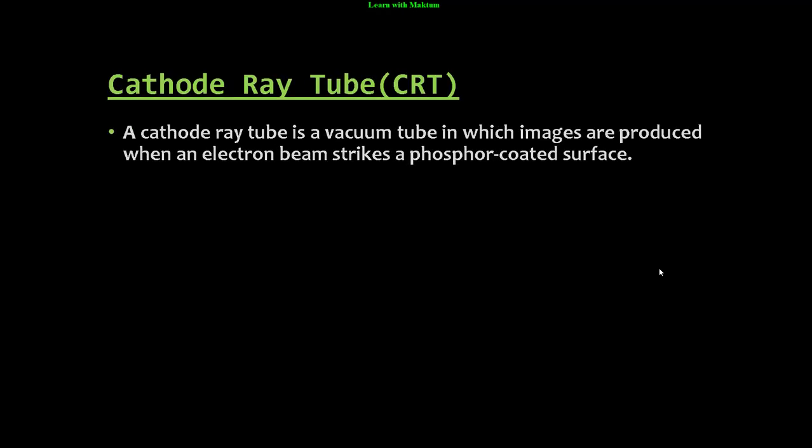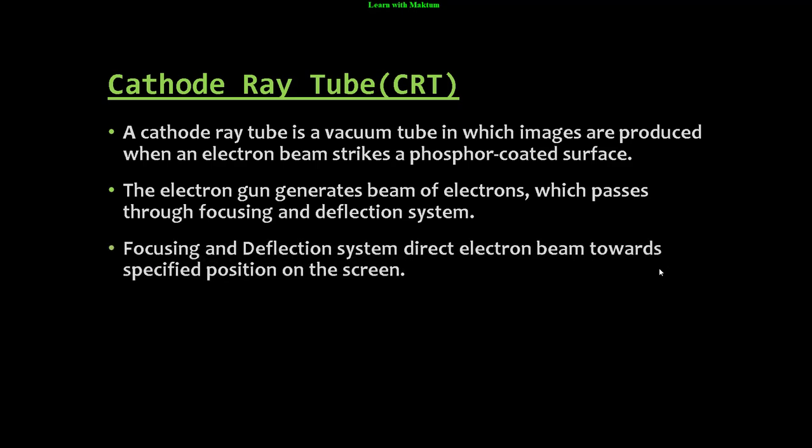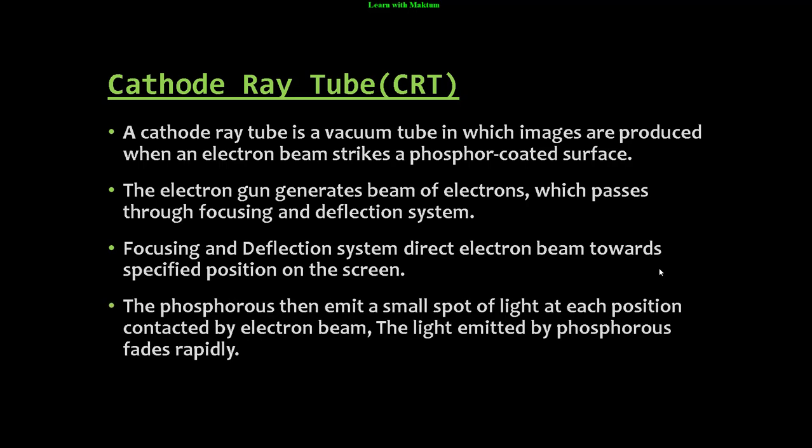A cathode ray tube is a vacuum tube in which images are produced when an electron beam strikes a phosphor coated surface. An electron gun generates a beam of electrons which passes through focusing and deflection systems. The focusing and deflection systems direct the electron beam towards specified positions on the screen.